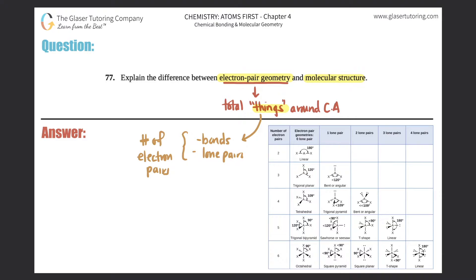And that's what this column is all about. This will give you a heads up as to what your electron pair geometry would be. It always takes the total amount of things, which is the bonds and the lone pairs, and puts a name to it.